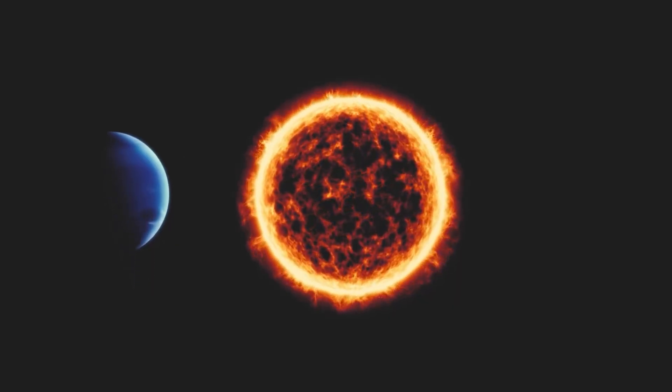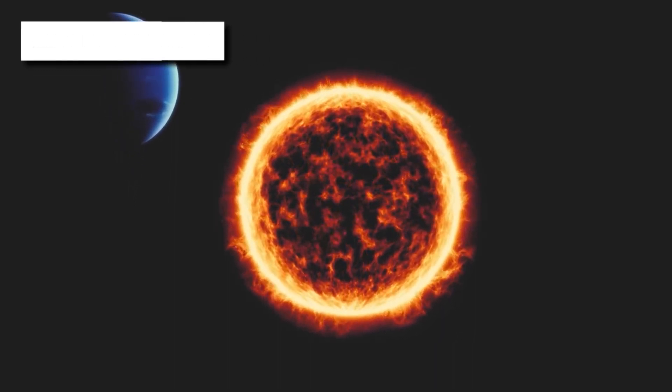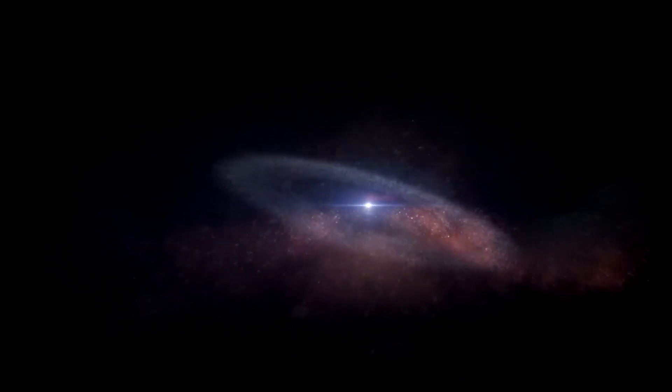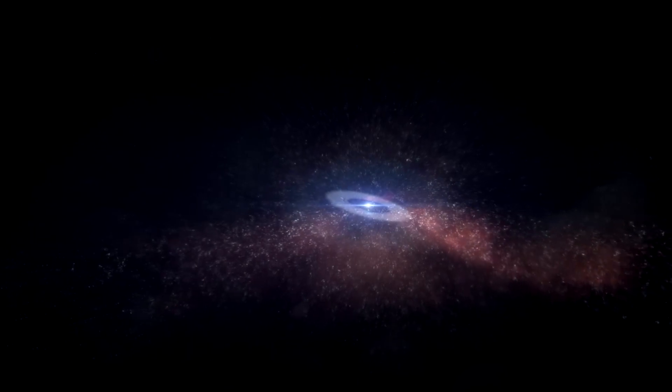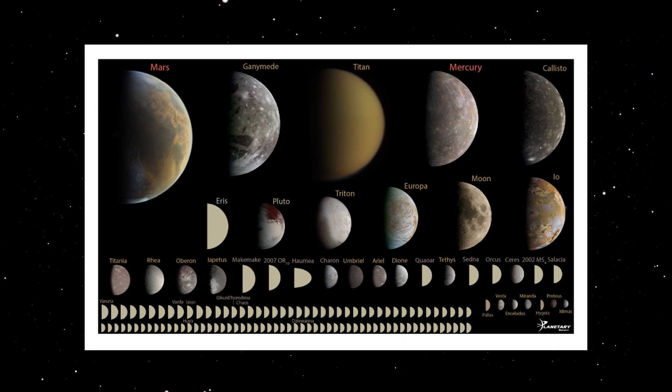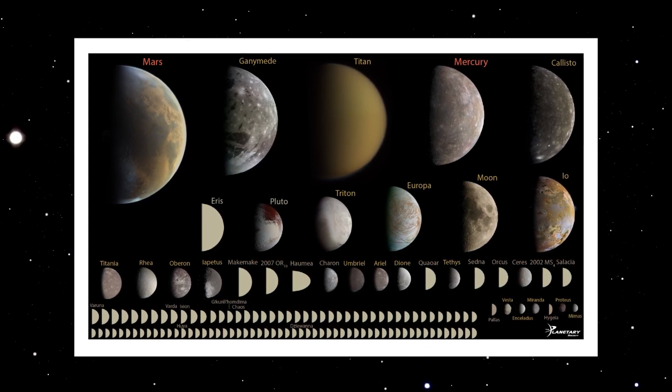Planet 9 researchers propose it might be located 250 to 500 astronomical units from the Sun, which is nearer to the Kuiper Belt, a region with icy objects near Neptune's orbit. Telescopes are getting better at spotting distant objects, revealing more trans-Neptunian objects, or TNOs, some moving in groups that imply a massive object's influence.